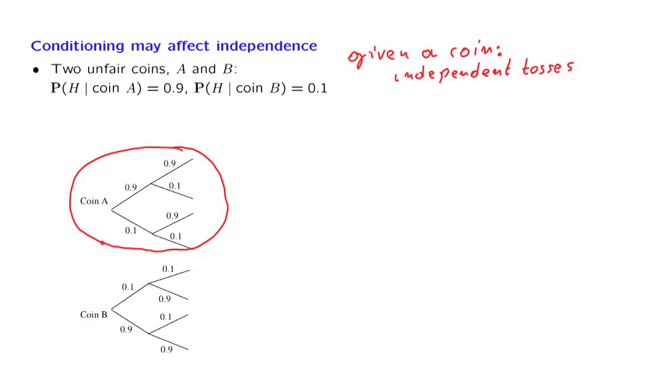Within this conditional model, coin flips are independent. And the same assumption is made in the other possible conditional universe. This is a universe in which we are dealing with coin B. Once more, we have conditionally independent tosses. And this time, the probability of heads at each toss is 0.1.